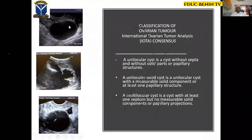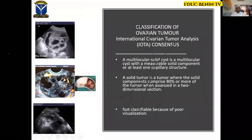A unilocular cyst is a cyst without septa and without any measurable solid components or papillary projections. A unilocular solid cyst is a unilocular cyst with a measurable solid component or papillary projection. A multilocular solid cyst is a multilocular cyst with at least a measurable solid component or papillary projection. A solid tumor is one where the solid components make up 80% or more of the tumor when assessed in two-dimensional sections, as seen in this adult granulosa cell tumor. Not classifiable means poor visualization, as in this case of dermoid with extensive shadowing.